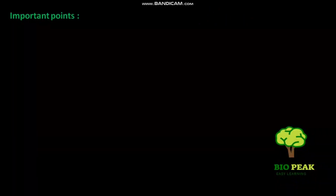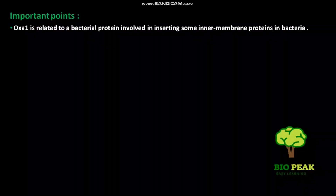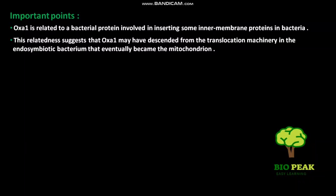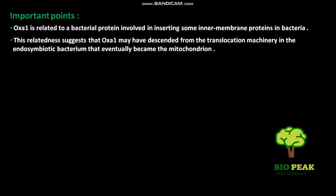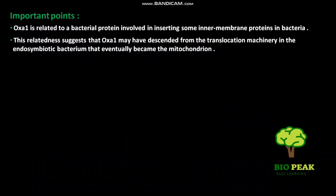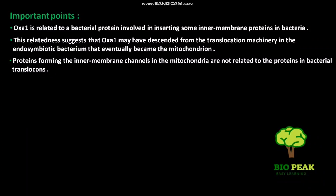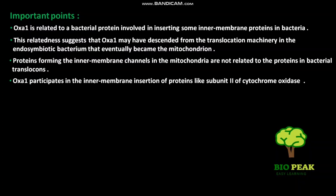Some important points: OXA1 is related to a bacterial protein involved in inserting some inner membrane proteins in bacteria. This relatedness suggests that OXA1 may have descended from the translocation machinery in the endosymbiotic bacterium that eventually became the mitochondrion. Proteins forming the inner membrane channels in the mitochondria are not related to the proteins in bacterial translocans. OXA1 participates in the inner membrane insertion of proteins like subunit 2 of cytochrome oxidase.